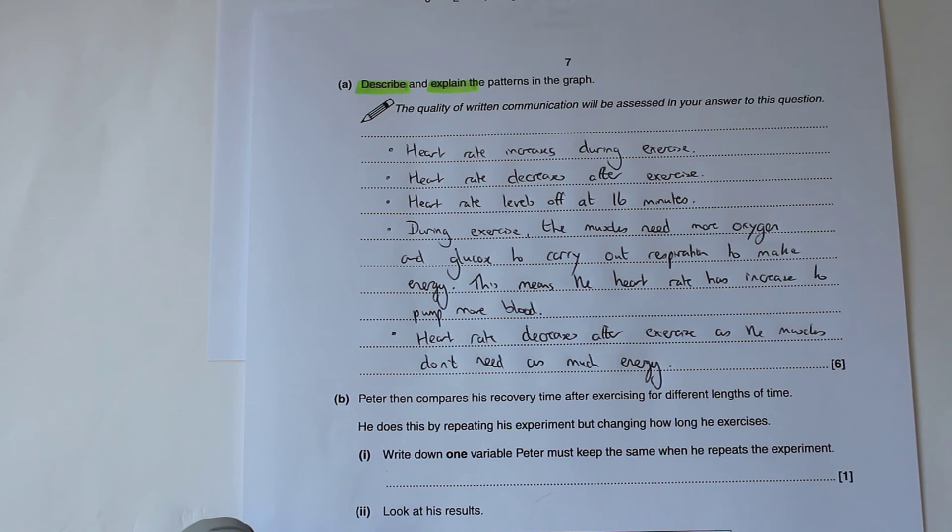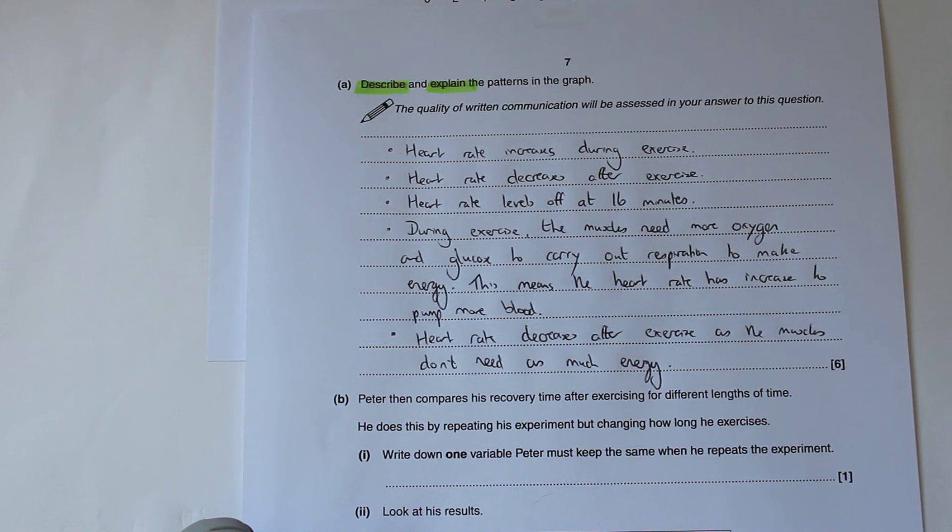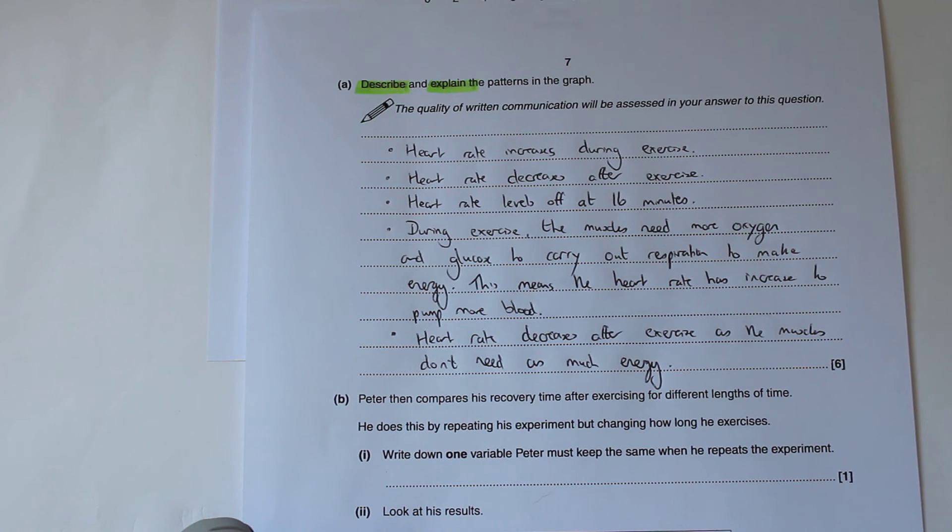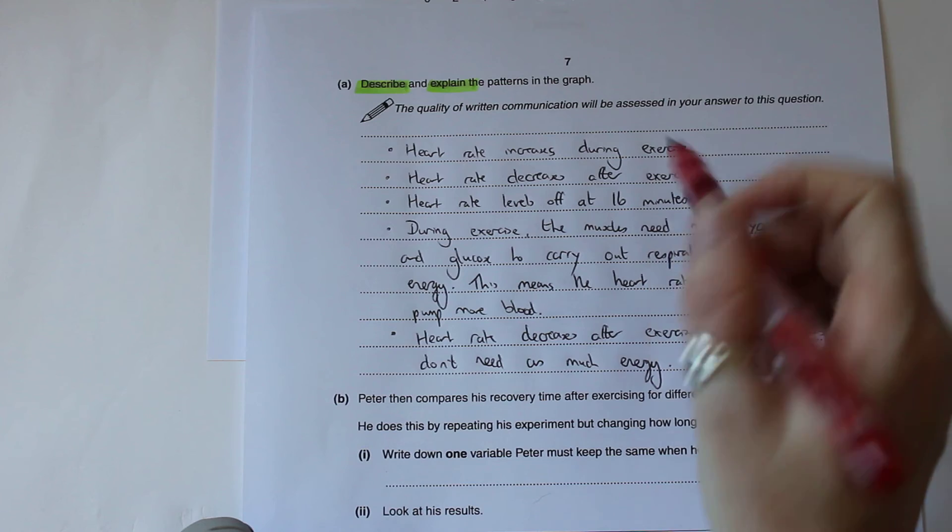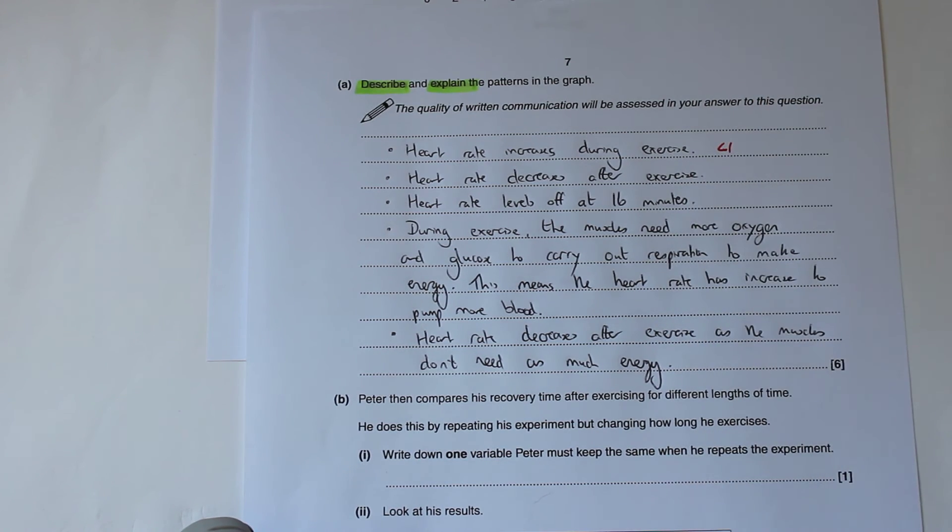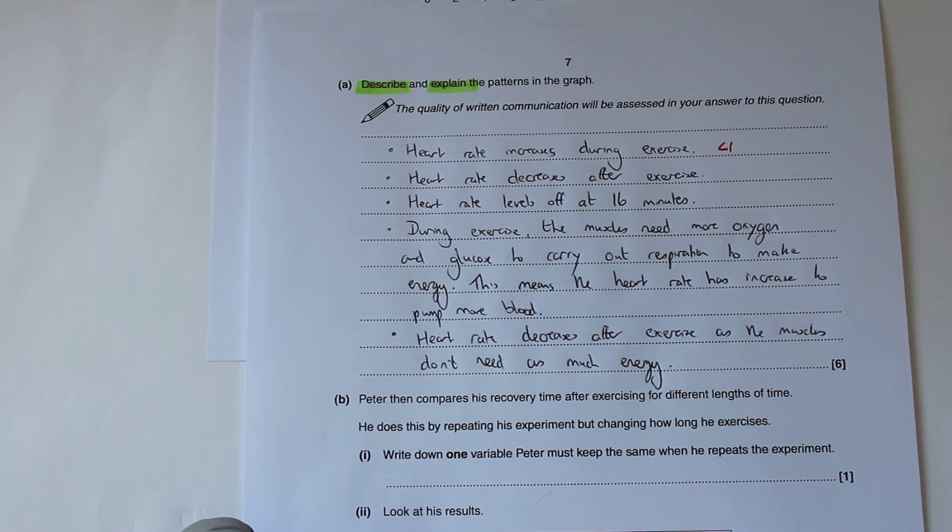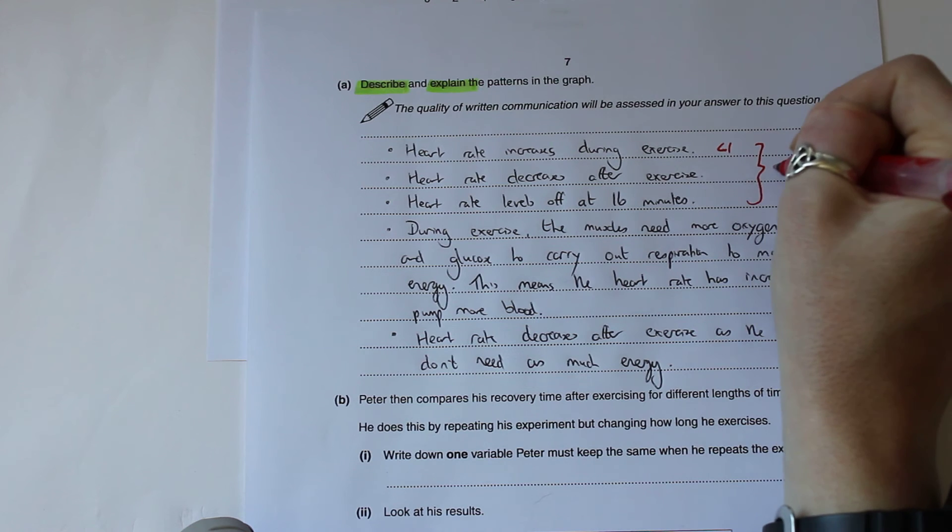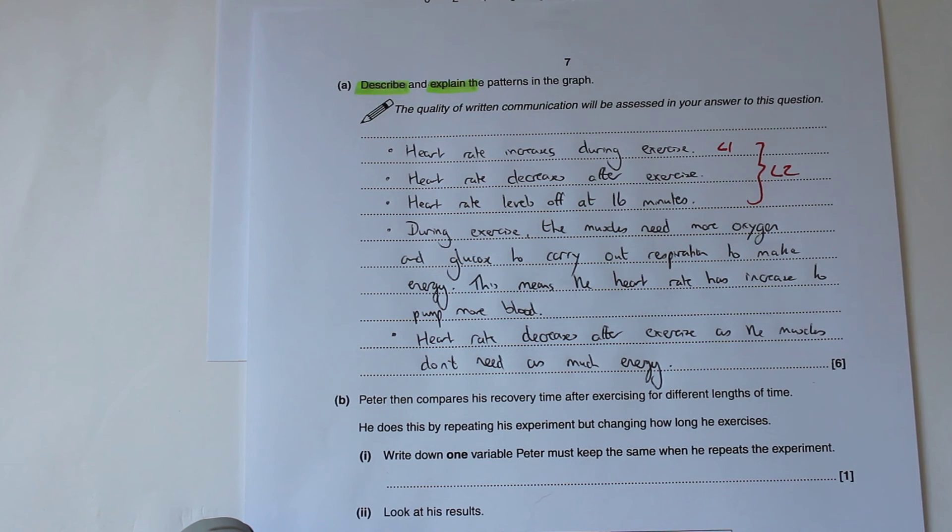That's literally the sum total of the answer we need to write down. Looking at the mark scheme, for a level one answer which is between one and two marks, we identify one pattern in the results or attempt to explain why the heart rate increases. For the level two answer which gets us between three and four marks, you could identify one of the patterns and attempt to explain why the heart rate increases or decreases, or identify the complete pattern without any explanation. In our case, that top bit is our level two answer, which gets us four marks already.